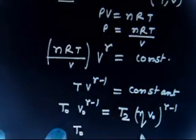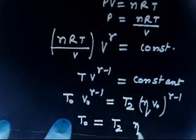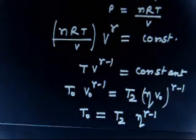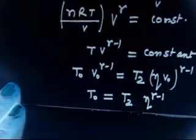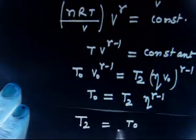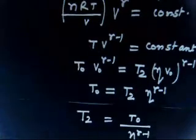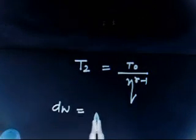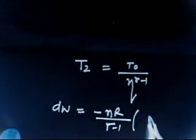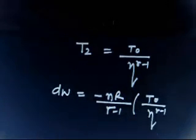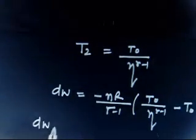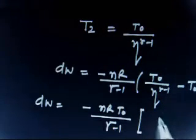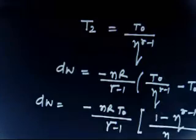From this, v₀^(γ−1) cancels and we get T₂ = T₀/η^(γ−1). Now the work done in the adiabatic process is: W_adiabatic = −nR/(γ−1) · [T₀/η^(γ−1) − T₀] = −nRT₀/(γ−1) · [1 − η^(γ−1)] / η^(γ−1).